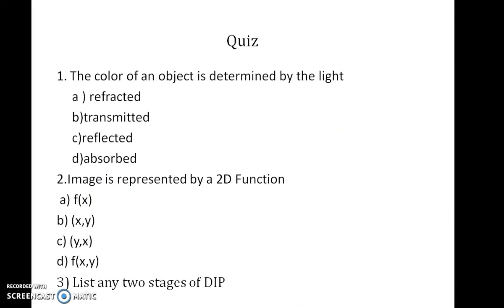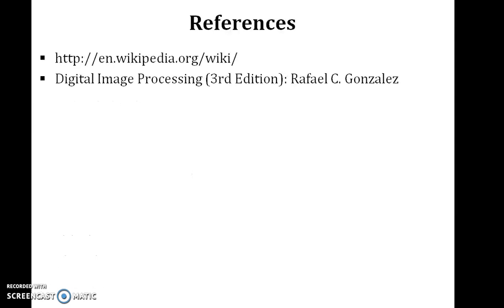Here is a small quest for you. The color of an object is determined by the light reflected, transmitted, and absorbed. Also, an image is represented by a 2D function. Four values have been given and you are asked to list any two stages of digital image processing. Thank you.